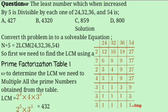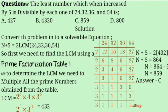From the LCM table, the result is 2 raised to 5 times 3 raised to 3, which equals 32 × 27 = 864 — wait, the LCM is 2³ × 4 × 3³ = 432. So LCM(24, 32, 36, 54) = 432. Then N + 5 = 2 × 432 = 864, so N = 864 − 5 = 859. The answer is 859.